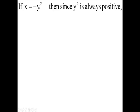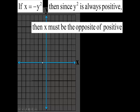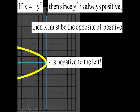That's what happens when y squared equals negative x. y squared is positive. The opposite of positive is negative, so we're saying x is negative. Where is x negative? To the left.